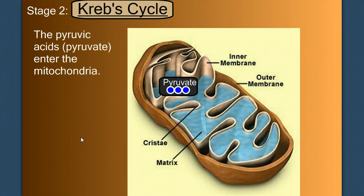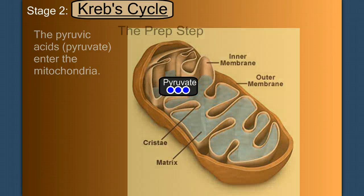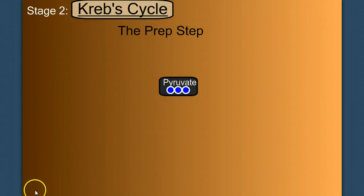The pyruvic acid, or pyruvate, enters the mitochondria. But before we can start the Krebs cycle, we need to prepare the pyruvate in what's called the prep step.